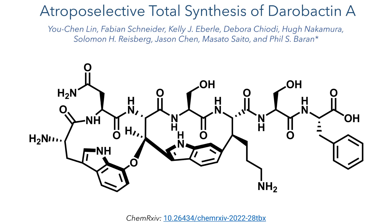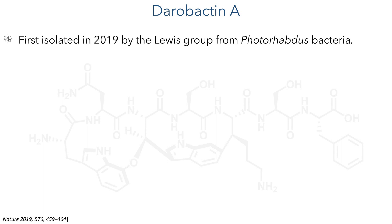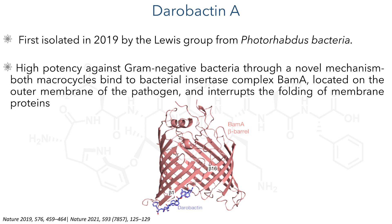This work was carried out by the Baran group at Scripps and a pre-print was uploaded to ChemRxiv. Darobactin A was first isolated in 2019 by the Lewis group from Photorhabdus bacteria. It shows high potency against gram-negative bacteria through a novel mechanism where both macrocycles bind to the bacterial insertase complex BAM-A, located on the outer membrane of the pathogen, interrupting folding of the membrane proteins and resulting in the death of the bacteria.